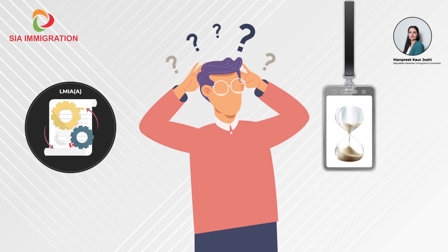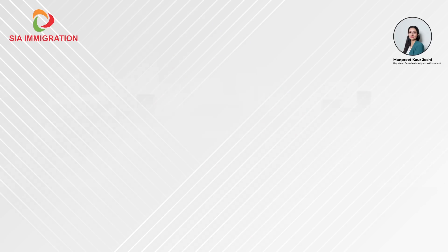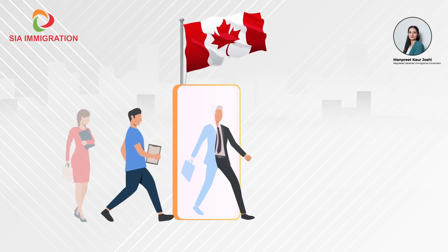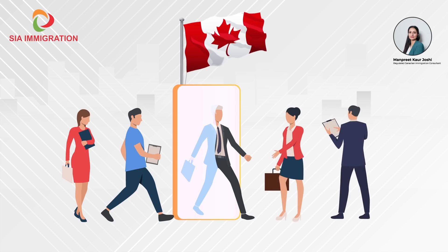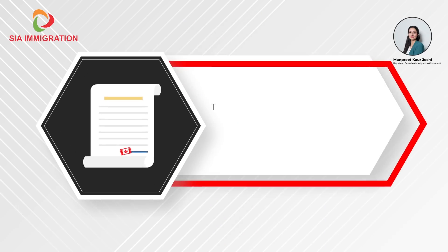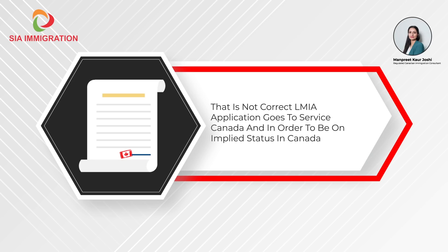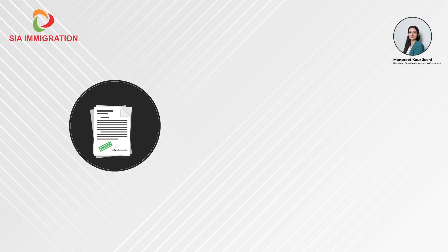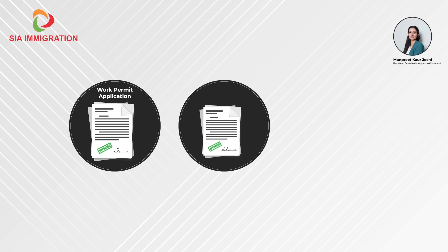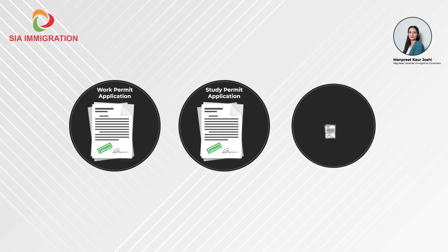Now let's talk about LMIA and implied status. A lot of times candidates get confused — if they have an LMIA application in process and their current work permit is about to expire, they think they will automatically go on implied status in Canada. That is not correct. The LMIA application goes to Service Canada, and in order to be on implied status in Canada, a candidate must submit a work permit application, study permit application, or visitor application.